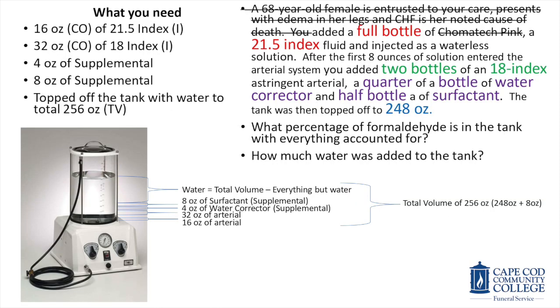As much as some of this information may be great for case analysis, it's not important or part of the math equation. Let's look at what's important by starting with terminology. The total volume is made up of everything in the tank before we start embalming, and typically includes water, all supplementals you've added, and all arterial chemicals.